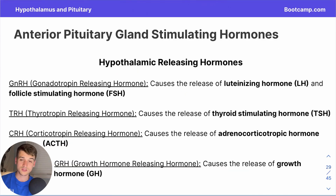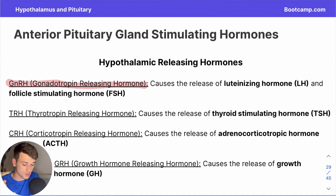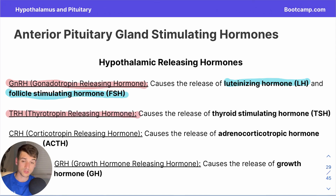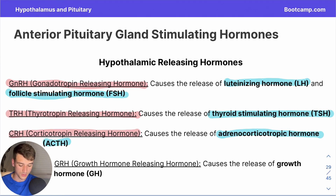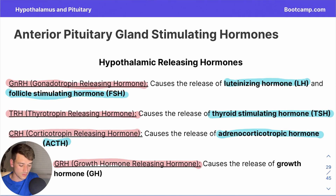Here are the hypothalamic stimulating hormones that pass through those portal veins to target the anterior pituitary. GnRH (gonadotropin-releasing hormone) stimulates the release of LH (luteinizing hormone) and FSH (follicle-stimulating hormone). TRH (thyrotropin-releasing hormone) causes the release of TSH (thyroid-stimulating hormone). CRH (corticotropin-releasing hormone) causes the release of ACTH (adrenocorticotropic hormone). And GRH (growth hormone-releasing hormone) causes the release of GH (growth hormone).